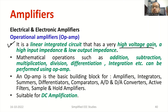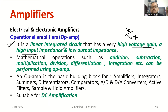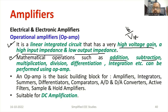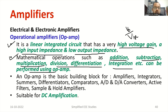Op-amp has high voltage gain. Voltage gain is the ratio of output voltage to input voltage — V0 divided by Vi. It has high input impedance, which means it will never be shorted. High input impedance is one of the desirable features. Also, low output impedance. Various mathematical operations such as addition, subtraction, multiplication, division, differentiation, and integration are possible to perform using an operational amplifier.